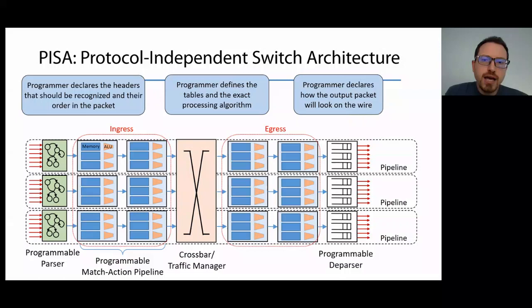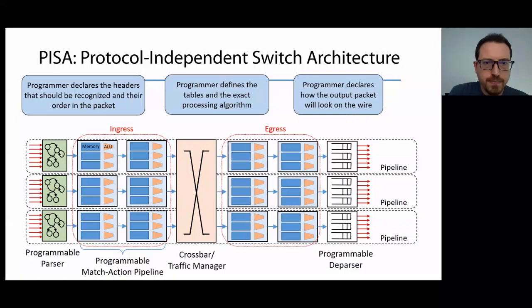If the processing logic is too complex, the switch either cannot execute that program, or the program requires multiple passes through the switch, which reduces the total bandwidth for external traffic that the switch can sustain.